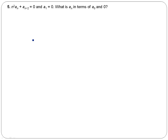Question number five. Here we have a relationship between an nth term and an n minus second term, and we're given that the first term is zero. We want to find a_n in terms of the zero term. So what I would do first here is solve for the nth term in terms of the n minus second term. I brought my n minus second term over to the right side of the equation and then divided both sides by n squared.